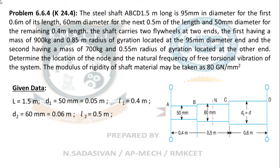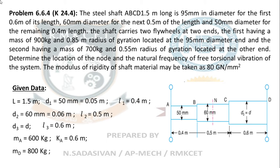From the diagram: D1 is 50 mm with length 0.4 meter; D2 is 60 mm with length 0.5 meter; D3 is an unknown value with length 0.6 meter. Mass of flywheel A is 600 kg with radius of gyration 0.6 meter. Mass of flywheel D is 800 kg with radius of gyration 0.9 meter. We need to determine the location of the node and the natural frequency of free torsional vibration.